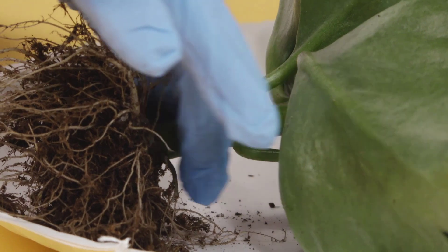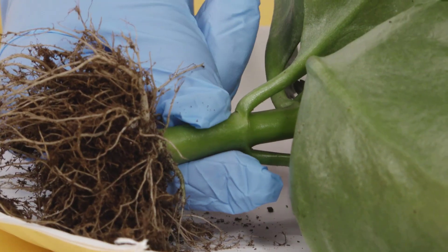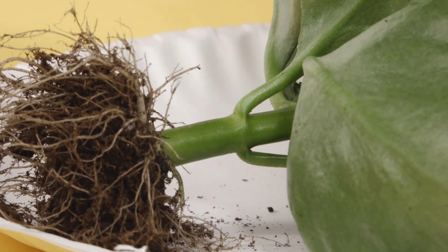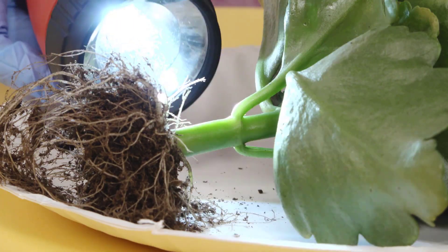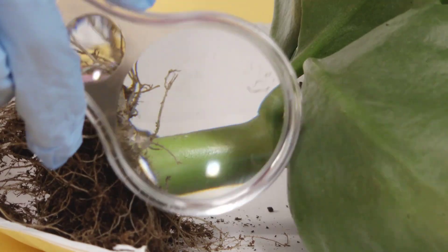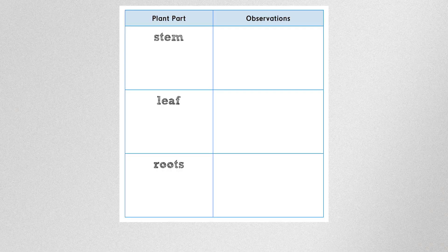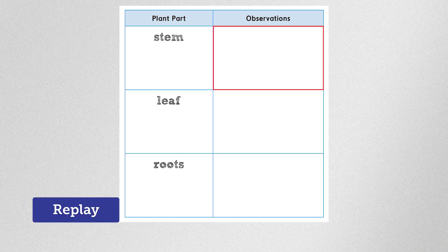What does the stem feel like? Is it bumpy or smooth? The stem feels smooth. When you shine the flashlight on the stem, does the light go through it? What else do you notice about the stem? Write your observations of the stem in the right column of the data table. If you need to see the stem again, select Replay. When you've finished writing your observations, select Next.